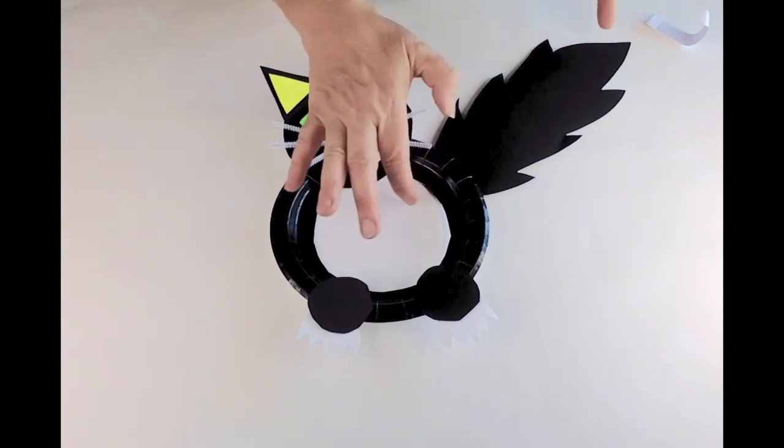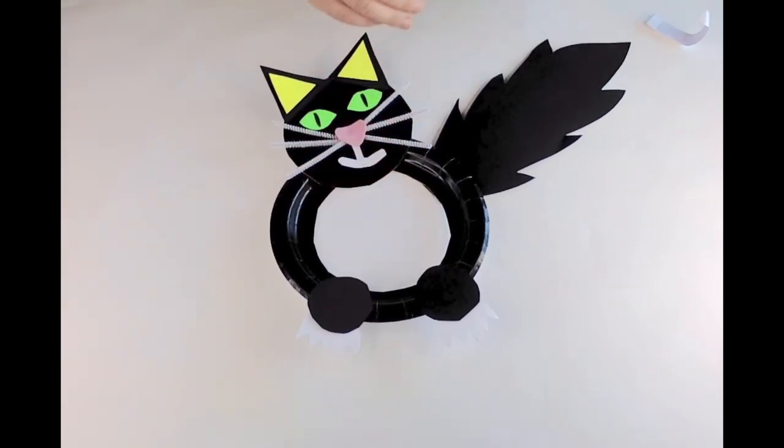And there I have my cat's tail. If the tail that you've got in your pack, you think, oh, that's too big, I want it a bit smaller, you could tear little bits off to make it extra fluffy. It's up to you.